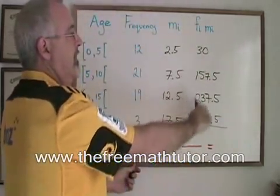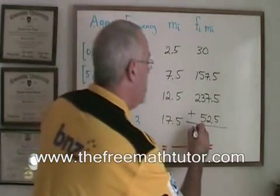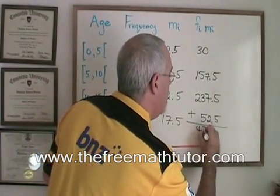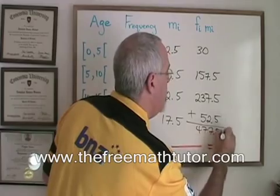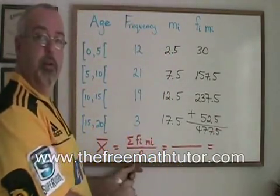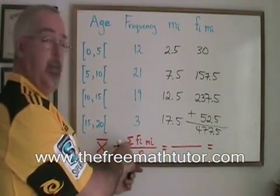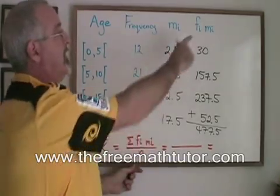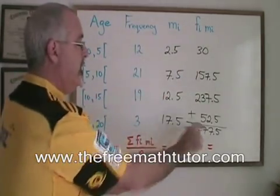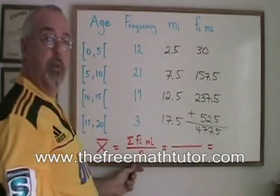If we add all of these fi mi's together, we get 477.5. The meaning of this numerator is just that. Add together, that's the sigma, all of the fi mi's that we have calculated. So the 477.5 therefore goes in the numerator of the formula.